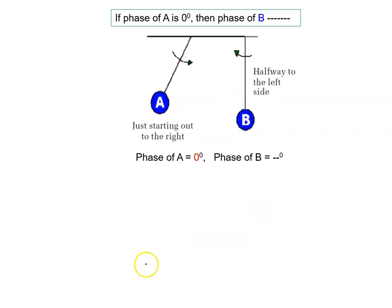Ab yahan pe dekho. A ka phase 0 degree. B ko apne yahan se release kiya. Abhi phase tha 0 degree. Phir yeh seedha hoa hoa. Phase hoa hoa 90 degree. Phir extreme pe gaya hoa. 180 degree. Aur vaapas yahan pe aya hoa.